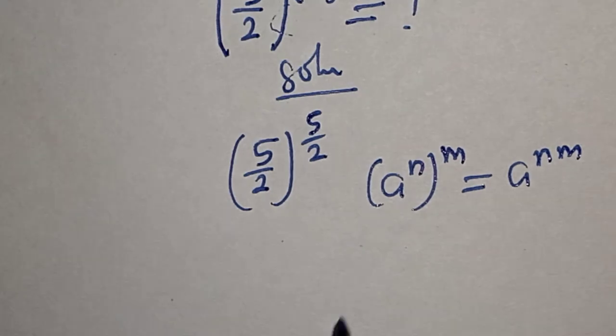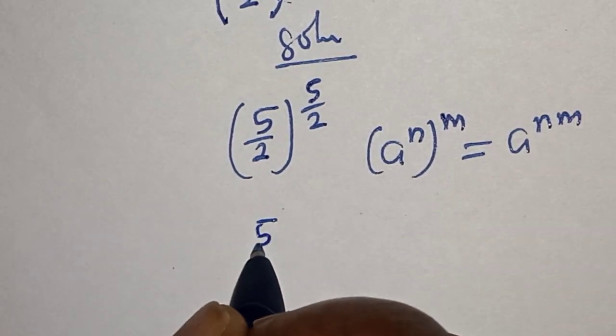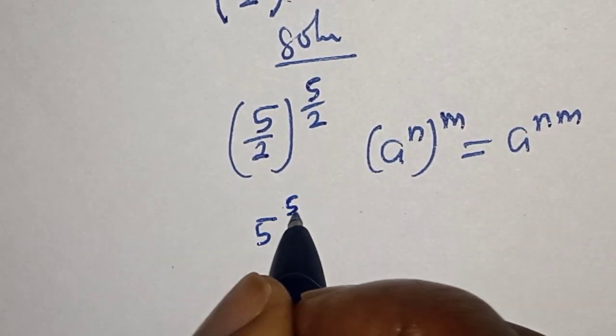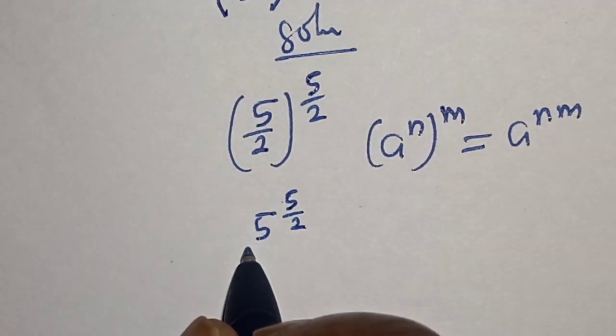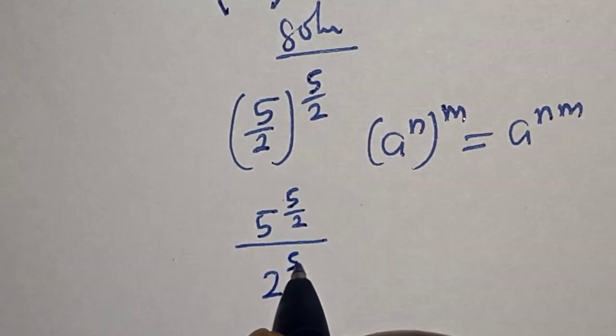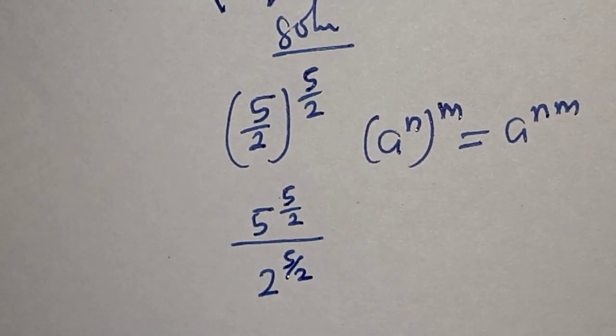Then this is 5^(5/2) divided by 2^(5/2).